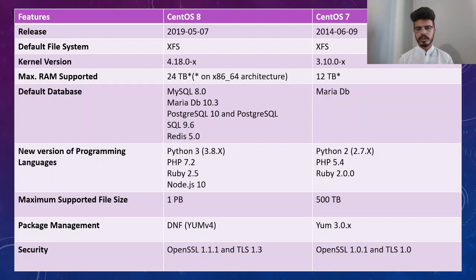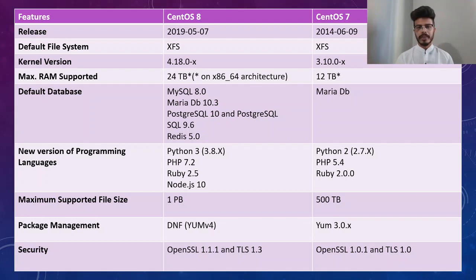Security has been upgraded drastically. You can see OpenSSL is now version 1.1.1 and TLS is 1.3, whereas previously it was OpenSSL 1.0.1 and TLS 1.0. Now let's discuss how security has been enhanced in CentOS 8.